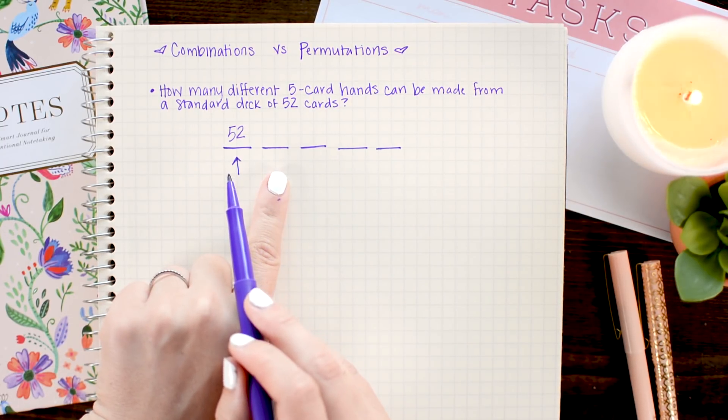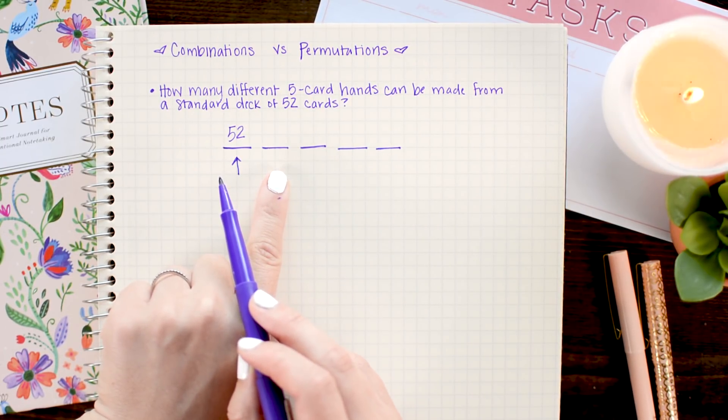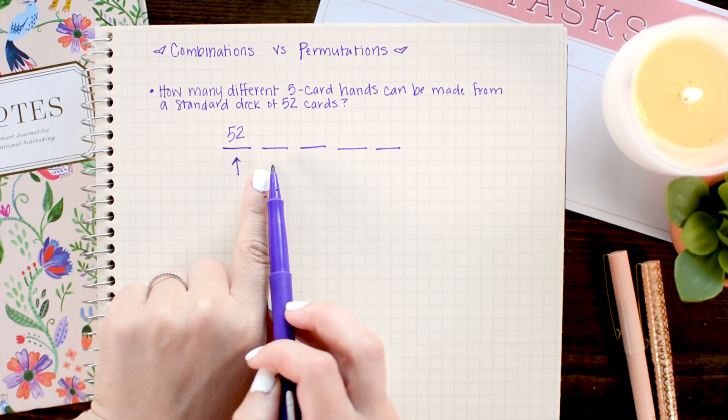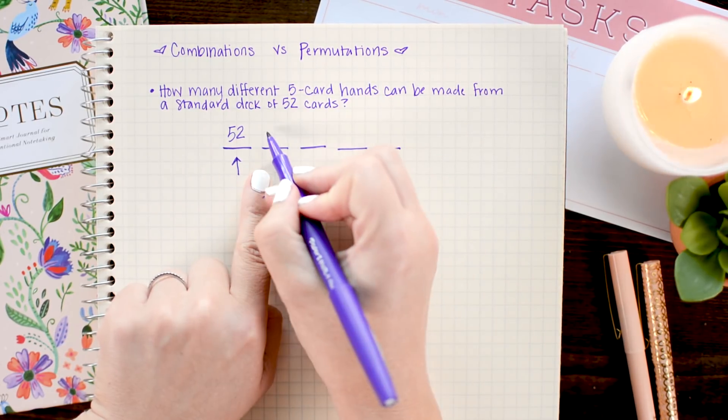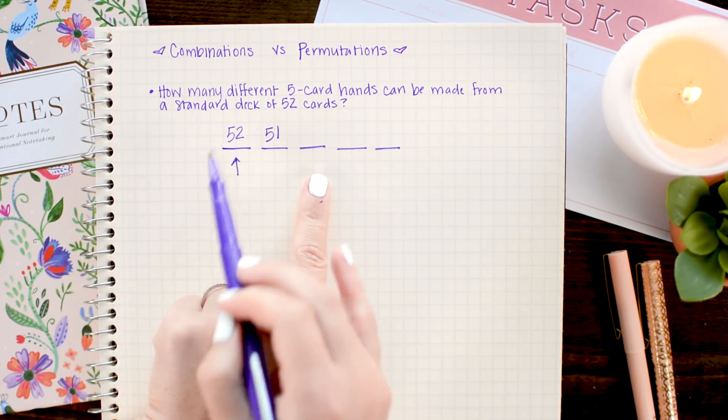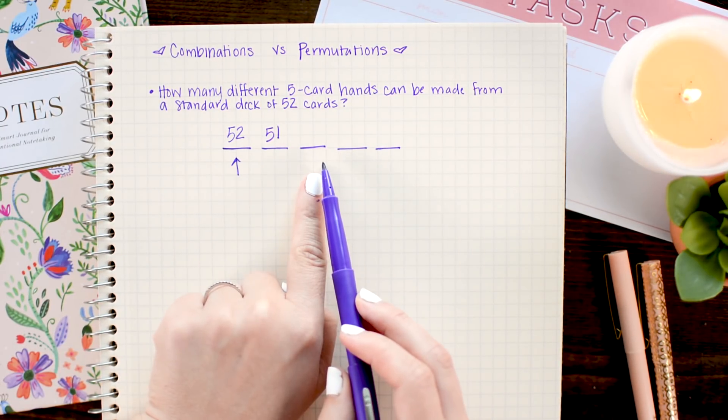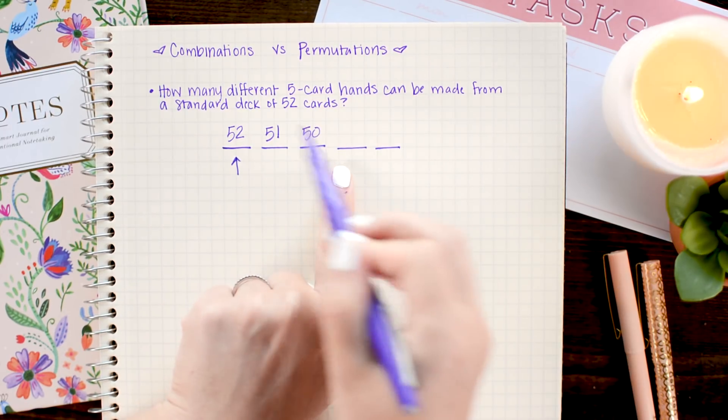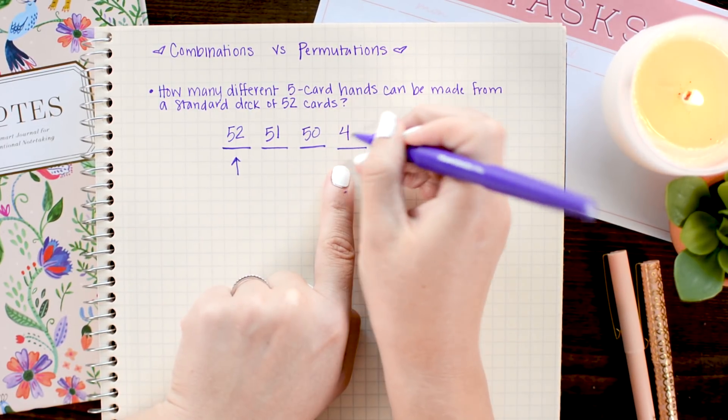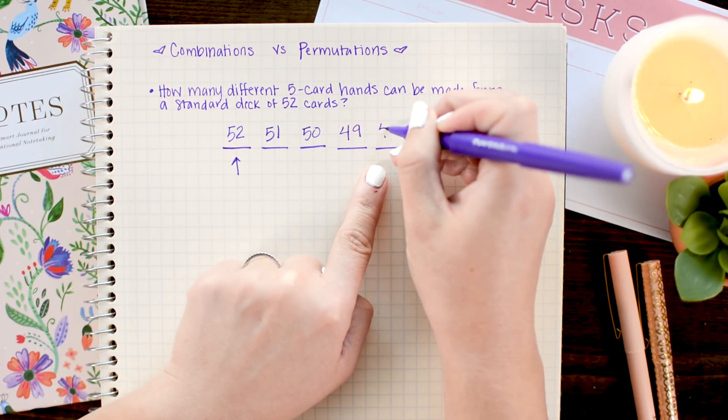Now, once I've taken one card out of the deck, the deck has 51 cards left. So for my second card, I only have 51 options left. So I'll put 51 here. Again, now I've pulled two cards. So for my third card, I only have 50 options left. I've pulled three cards. So I have 49 left. And 48.